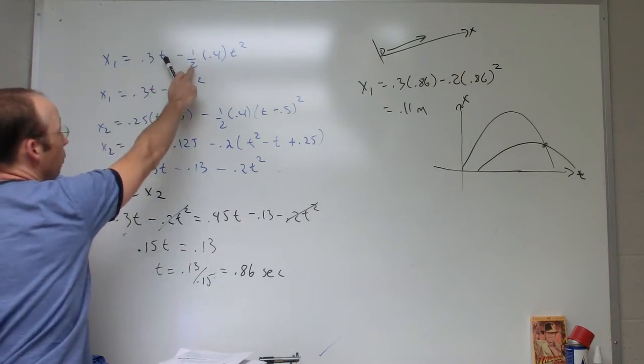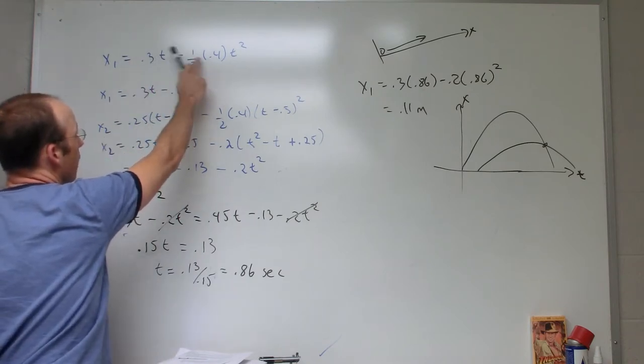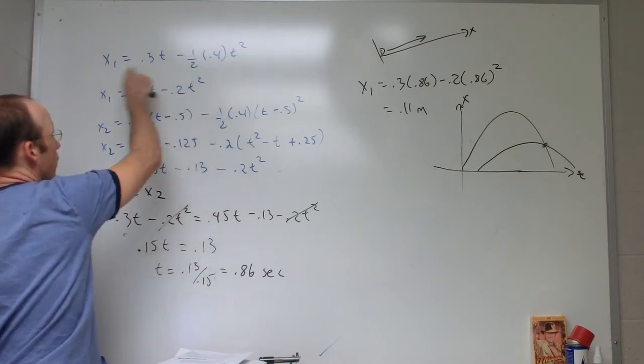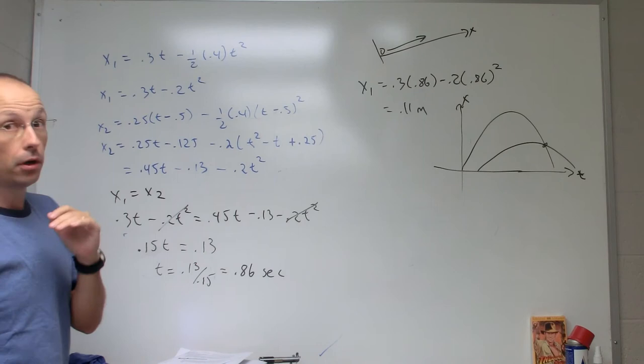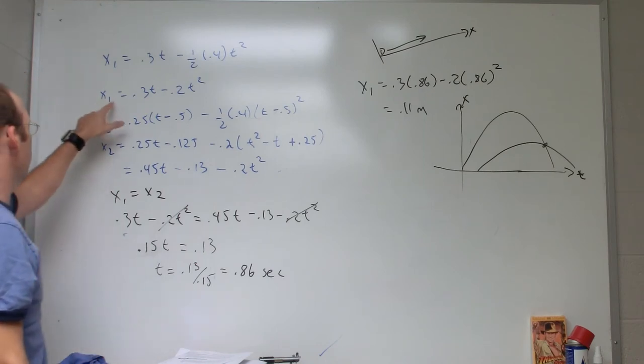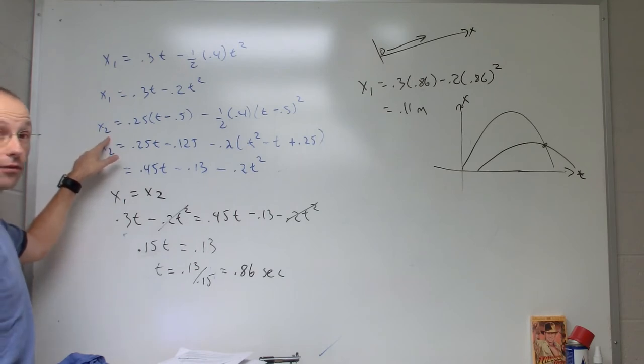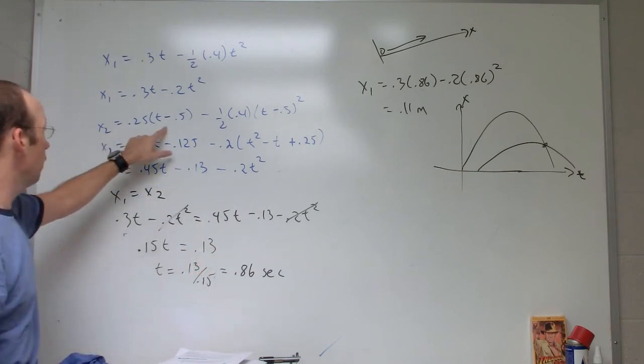Here's the first position. I said it started at x equals 0 at time t equals 0 and starts with this velocity: 0.3 minus one-half the acceleration (the minus really goes with the acceleration, but it doesn't matter) t squared. That's just your basic kinematic equation for ball 1. I have to rewrite that. All I did was multiply one-half times 0.4.